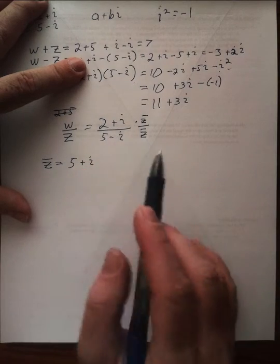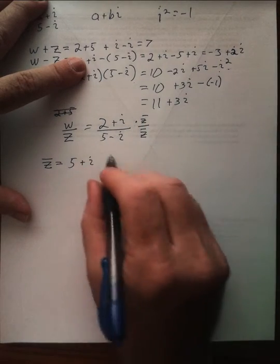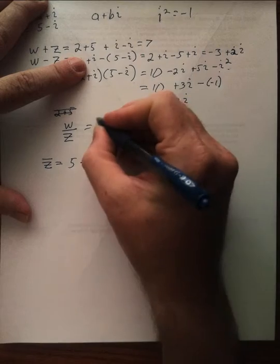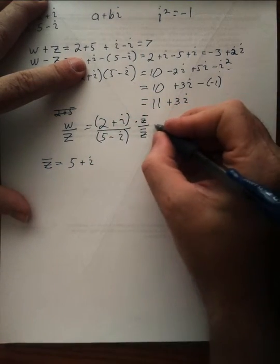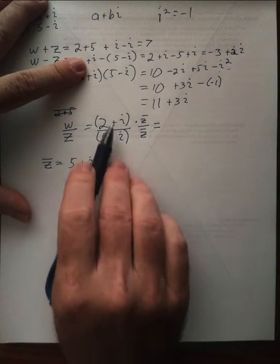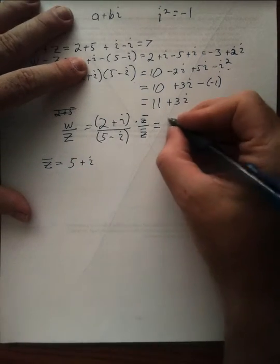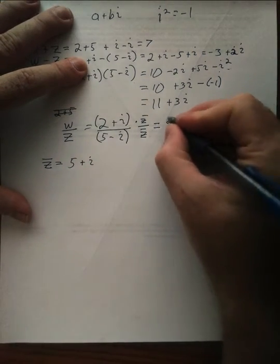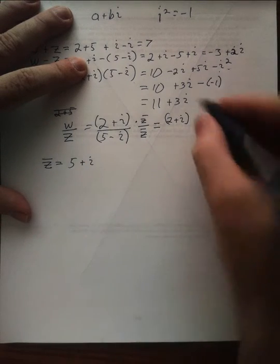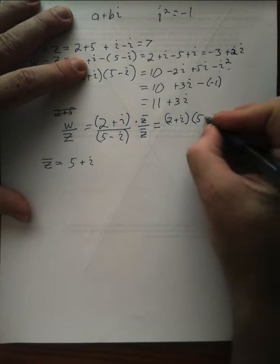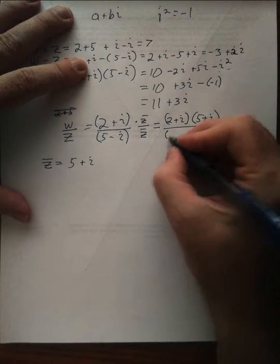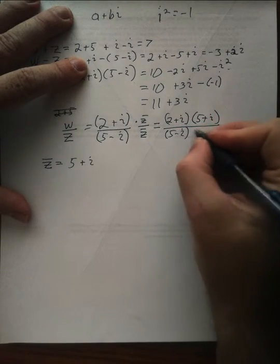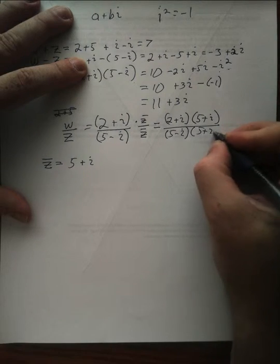Multiplying fractions, you multiply numerators, multiply denominators. And remember, the fraction bar is a grouping symbol. It's like having parentheses around what's here and here. So to make this in standard form, we write 2 plus i in parentheses here. And now I'm going to write Z conjugate here, 5 plus i. And in the bottom, again, 5 minus i times 5 plus i.